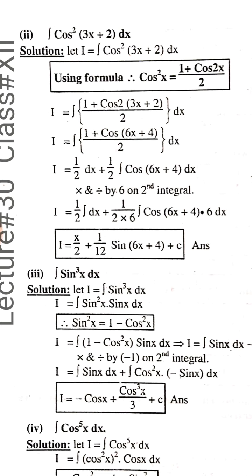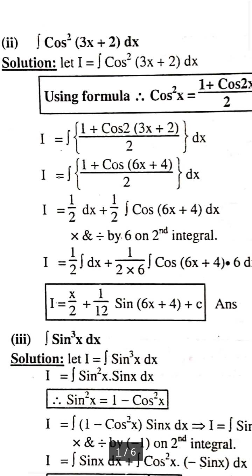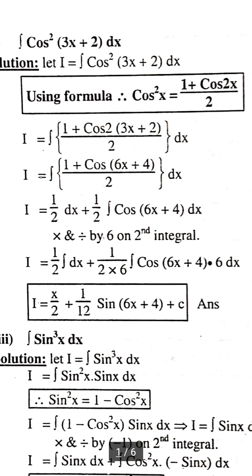Question number 2 is: integration of cos²(3x + 2) dx. We know that cos²x = (1 + cos2x) / 2. This is a trigonometric identity from first year. We have I = integration of cos²(3x + 2) dx, and we apply the identity: cos²x = (1 + cos2x) / 2.